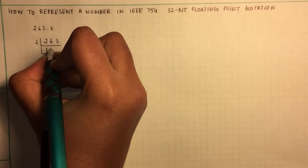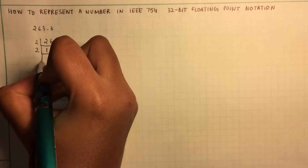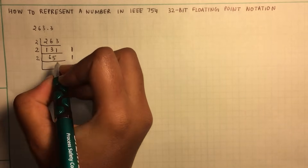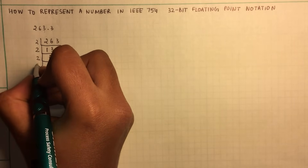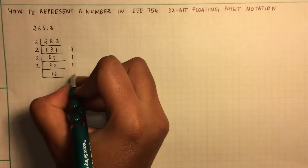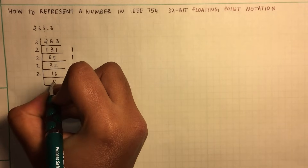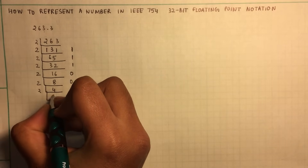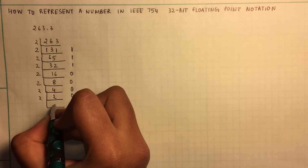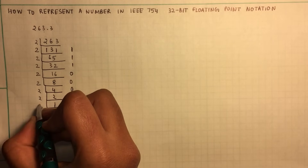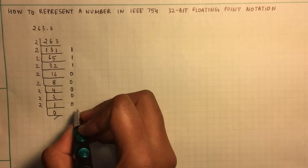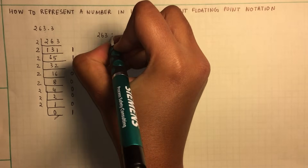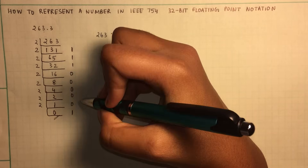So in this case it would be 131, remainder 1; divided by 2 again gives 65, remainder 1; divided by 2 gives 32, remainder 1; then 16, remainder 0. This continues until you get a 0 in the quotient column, and that is where it stops. 263 in binary form is just the remainder bits read in order.